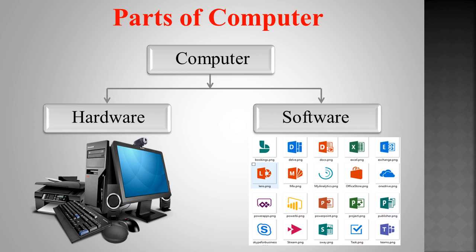Hardware can be further categorized into two parts: the first is internal hardware and the second is external hardware. Next, what is software? Software is the set of instructions that can be stored and run by hardware. Software relates to a set of programs that control the computer hardware parts and make them operational. It governs the operations of a computer system. Software is classified into two broad categories: the first is system software and the second is application software.